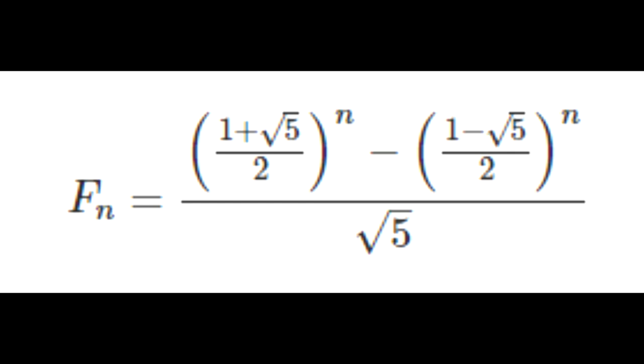So F of n is equal to 1 plus square root of 5 over 2 to the nth power subtract by 1 minus square root of 5 over 2 to the nth power divided by square root of 5. This is a property that was created using something called generating functions. I'm not 100% sure how they came up with this formula but it does work.